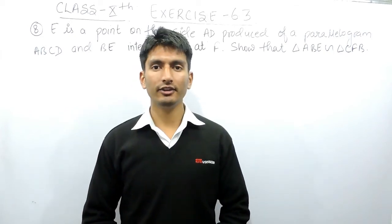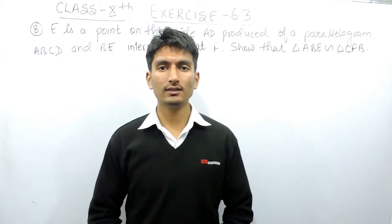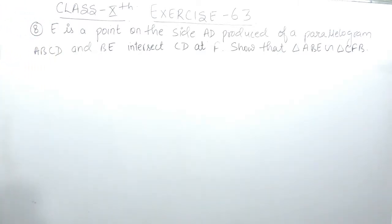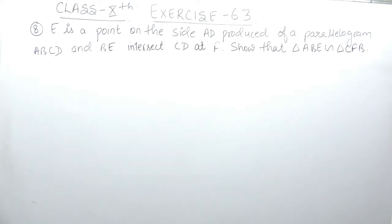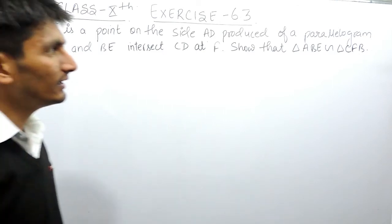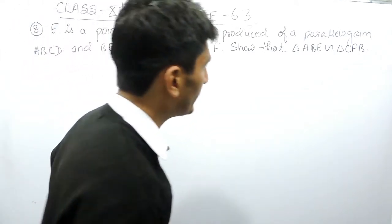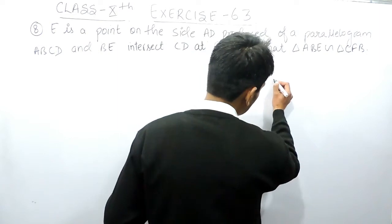Hello everyone, we are from True Math and in this video we are going to solve question number eight of exercise 6.3. The question says: E is a point on the side AD produced of a parallelogram ABCD, and BE intersects CD at F. You have to show that triangle ABE is similar to triangle CFB.